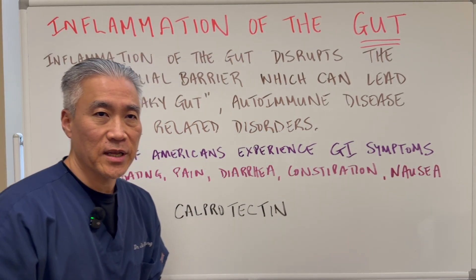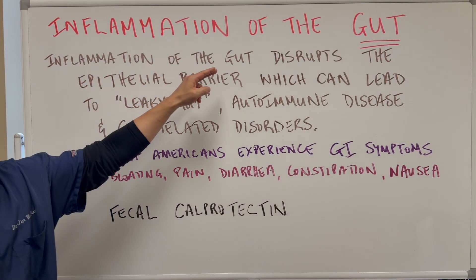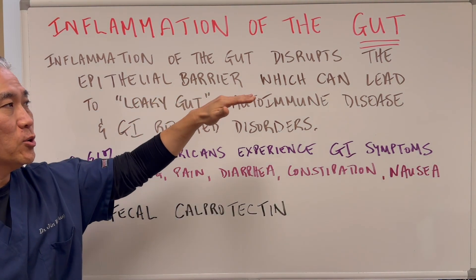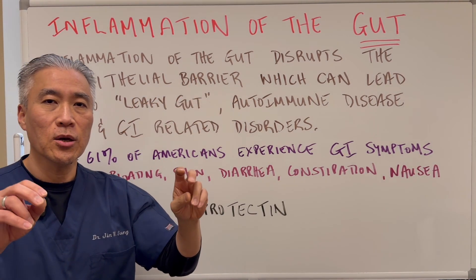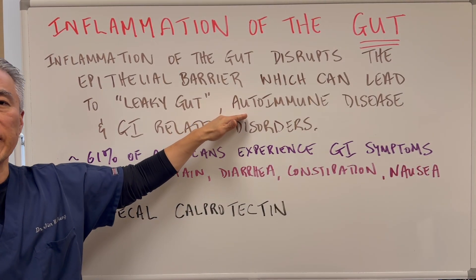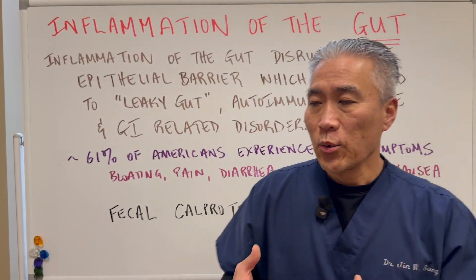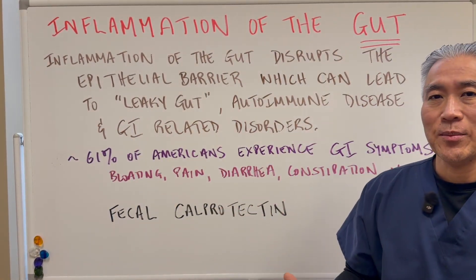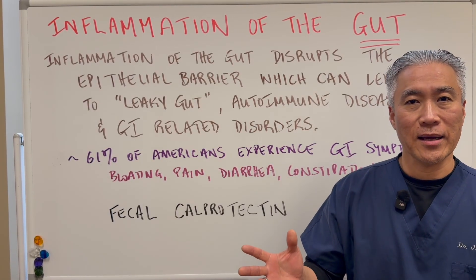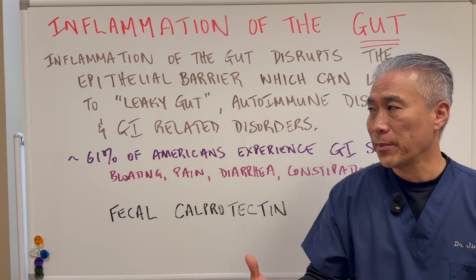If you have chronic inflammation of the gut, it disrupts the epithelial barrier, which can lead to leaky gut or intestinal permeability. It can also perpetuate autoimmune disease and GI-related disorders. When you have inflammation, it does damage, and that damage is not localized just to the gut — it starts to go systemic and causes low-grade inflammation throughout your body.